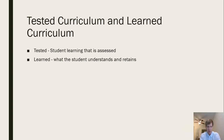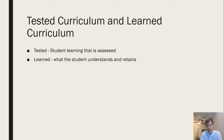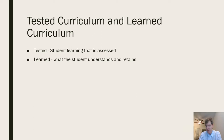The tested curriculum deals with student learning that is actually assessed. Formative assessment is given as students are learning, while high-stakes assessments are given at the end of a unit of instruction. Then there is the learned curriculum — what the student actually understands and retains. Ideally the tested curriculum sheds light on the learned curriculum, but that's not always the case because some tests are not used properly or are problematic, making it difficult to see what students truly learned.